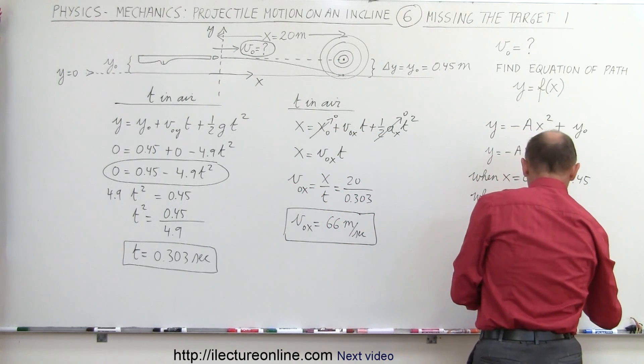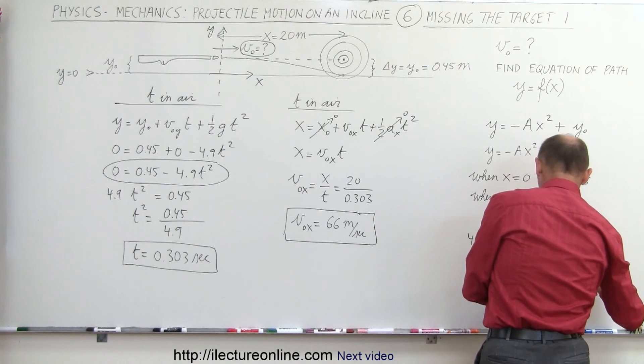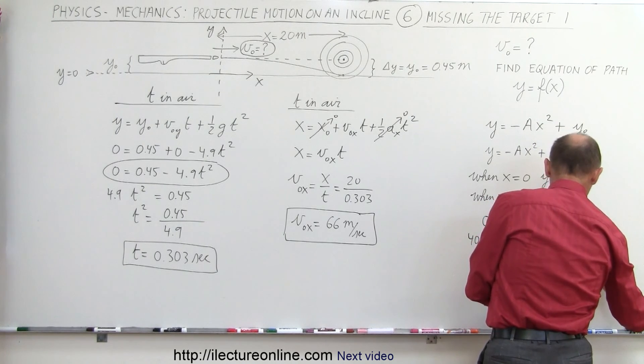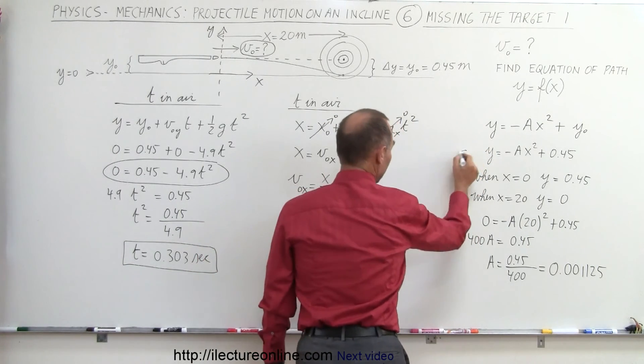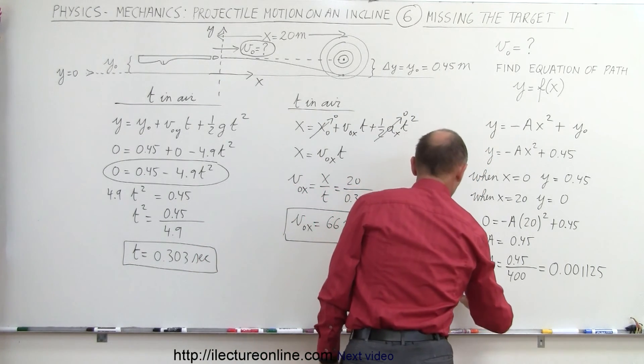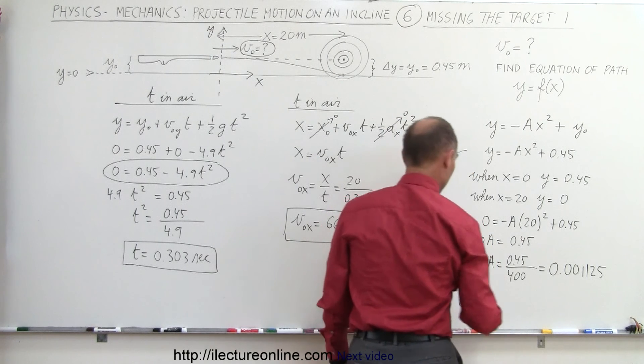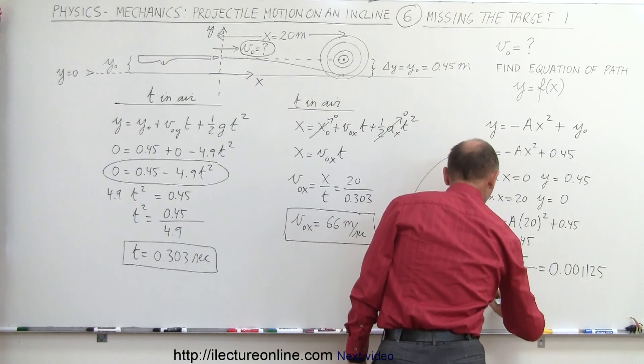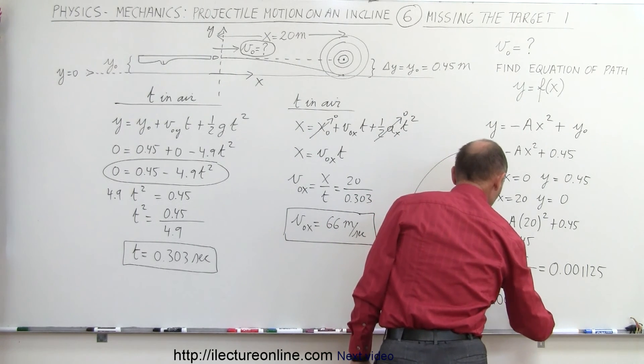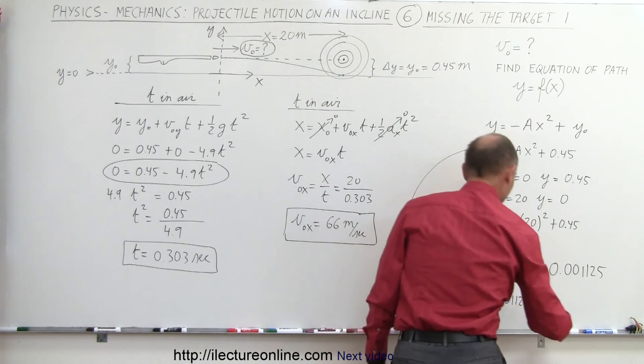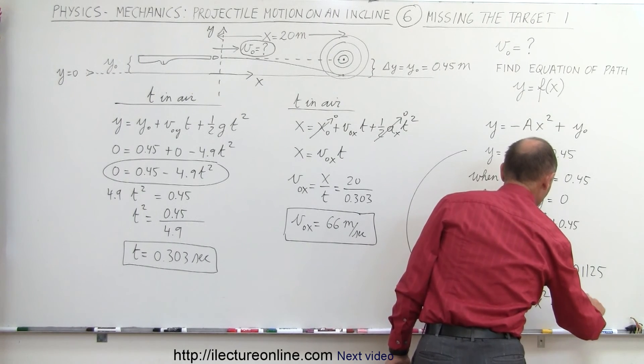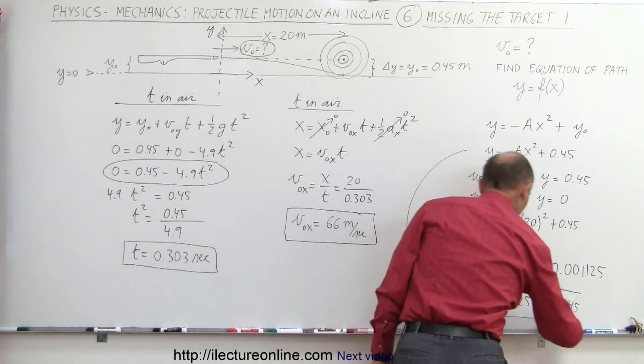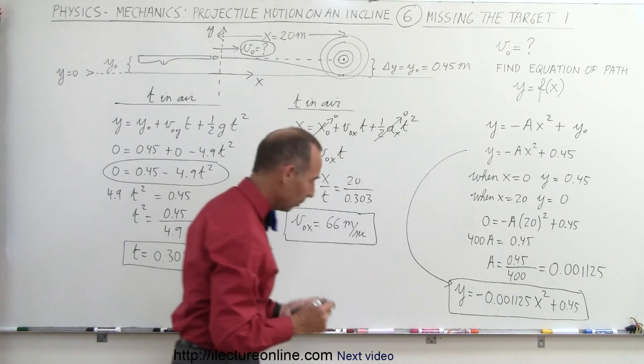And finally plug in that value into our equation right here. Here we can say that y equals minus 0.001125 times x squared plus 0.45 is the equation that describes the path of the bullet.